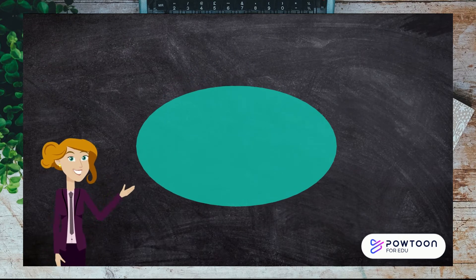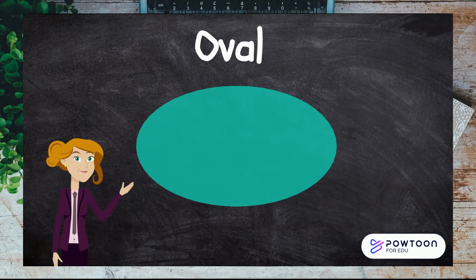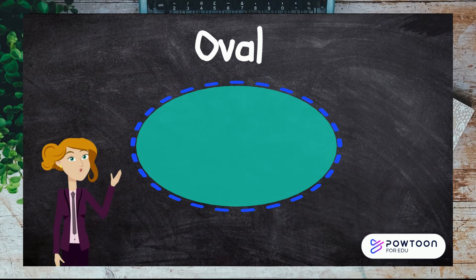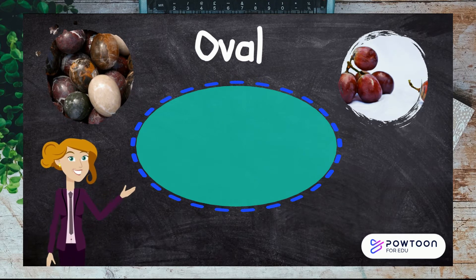An oval is a circle that's been squashed. It also has one line that goes all the way around. Can you see any other ovals in your environment?